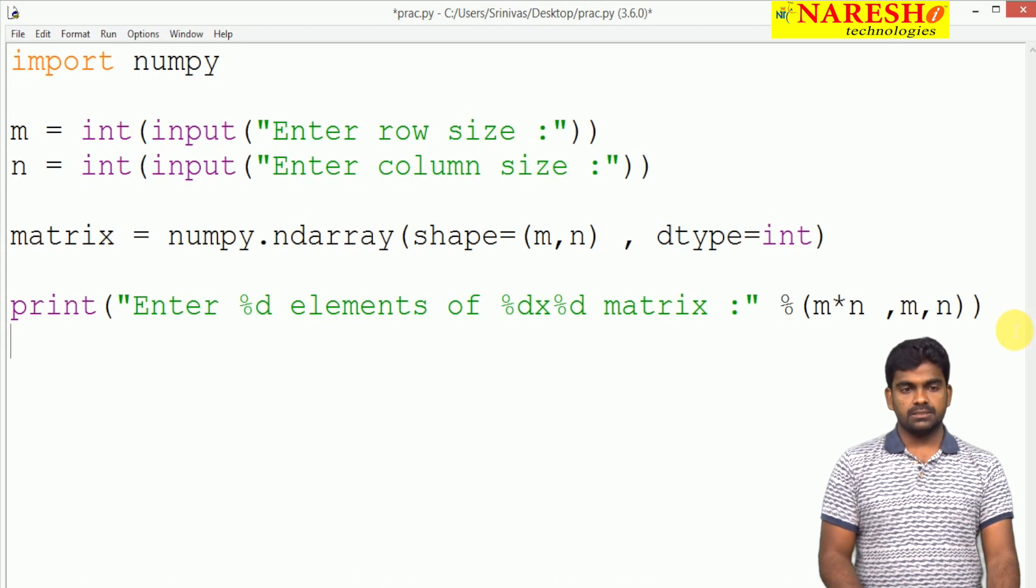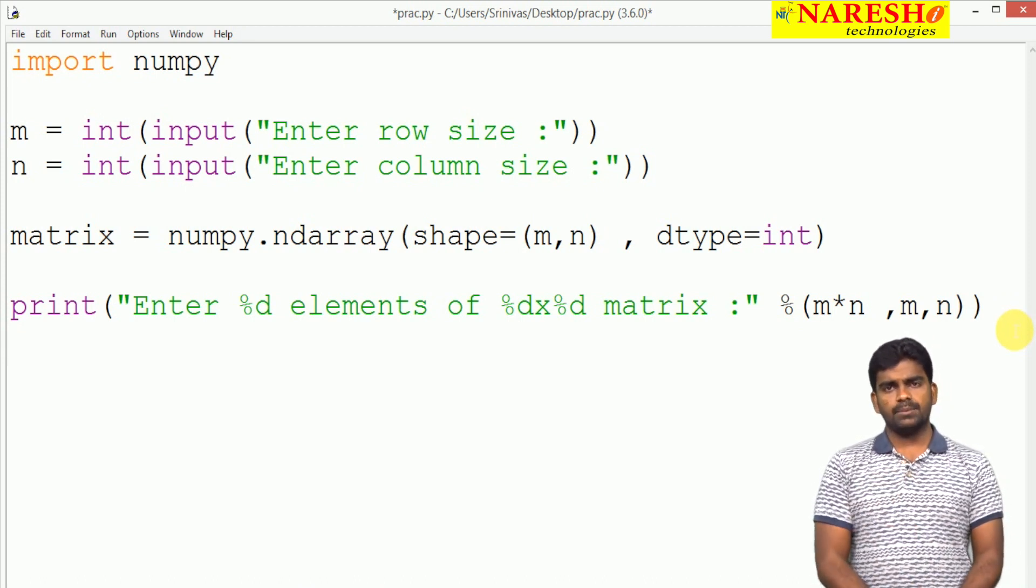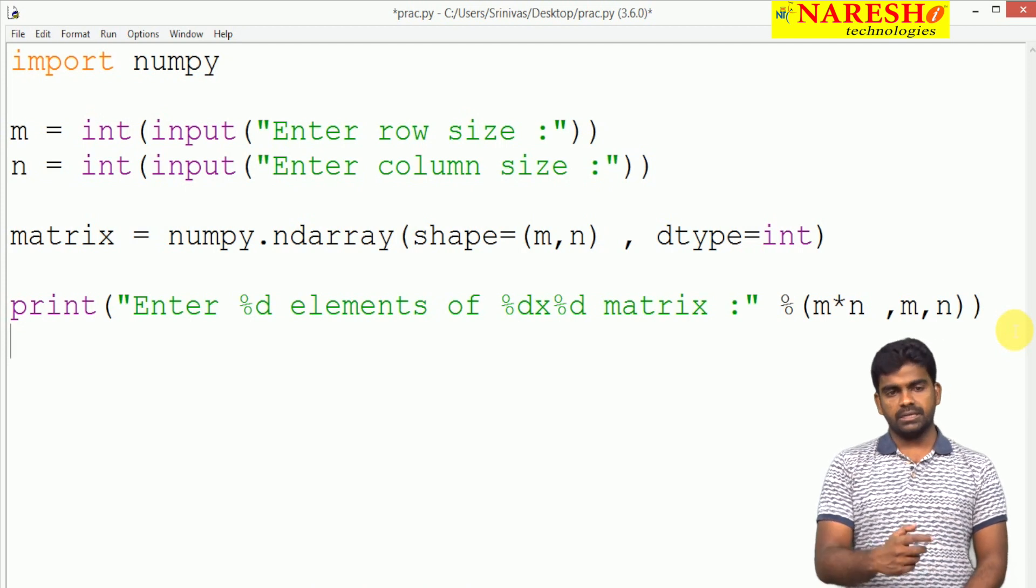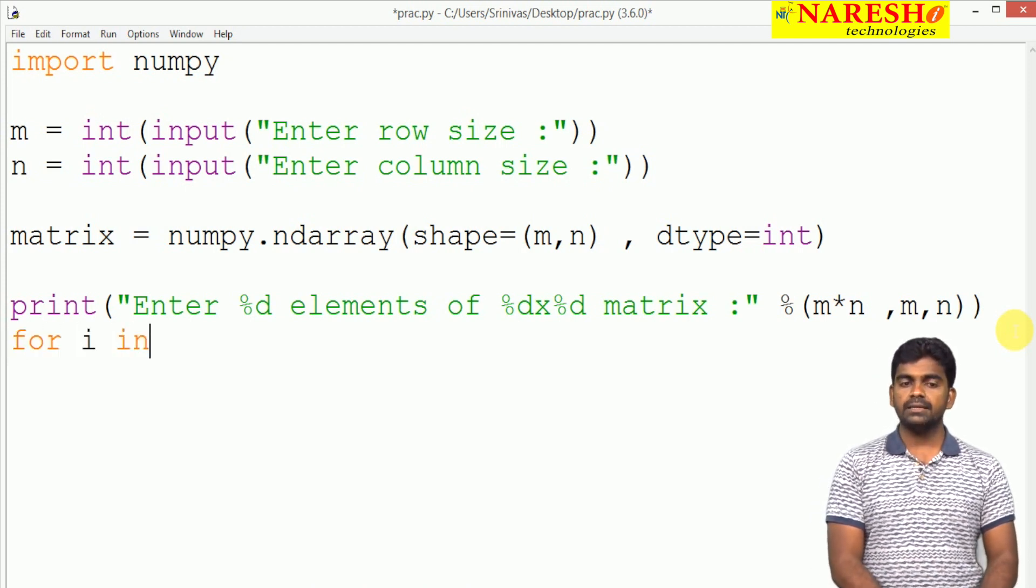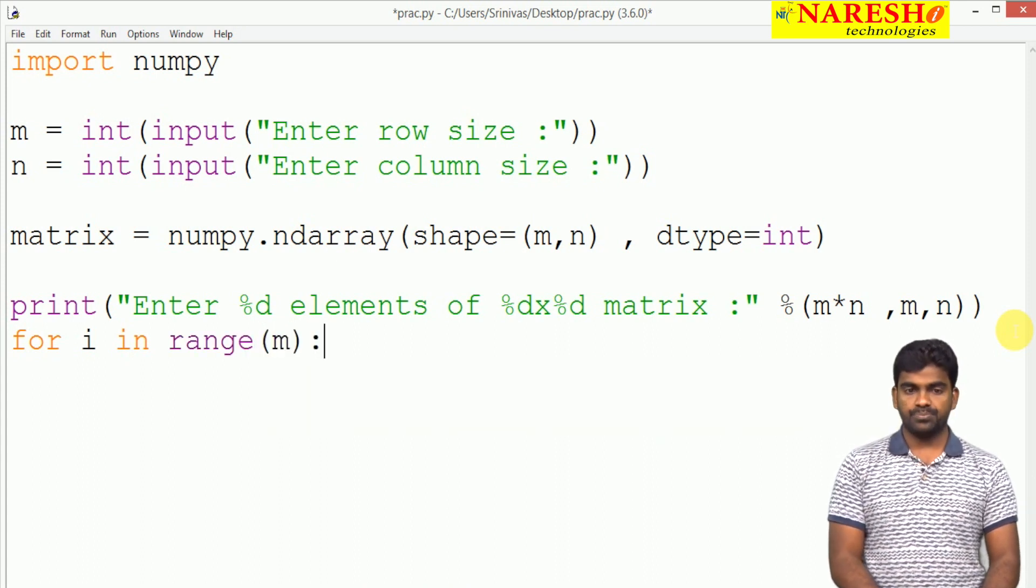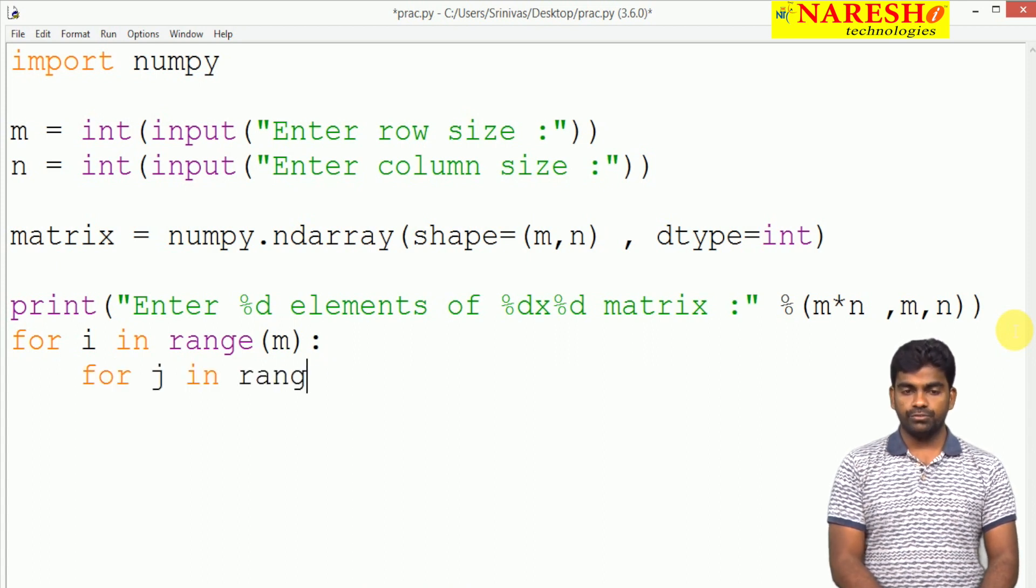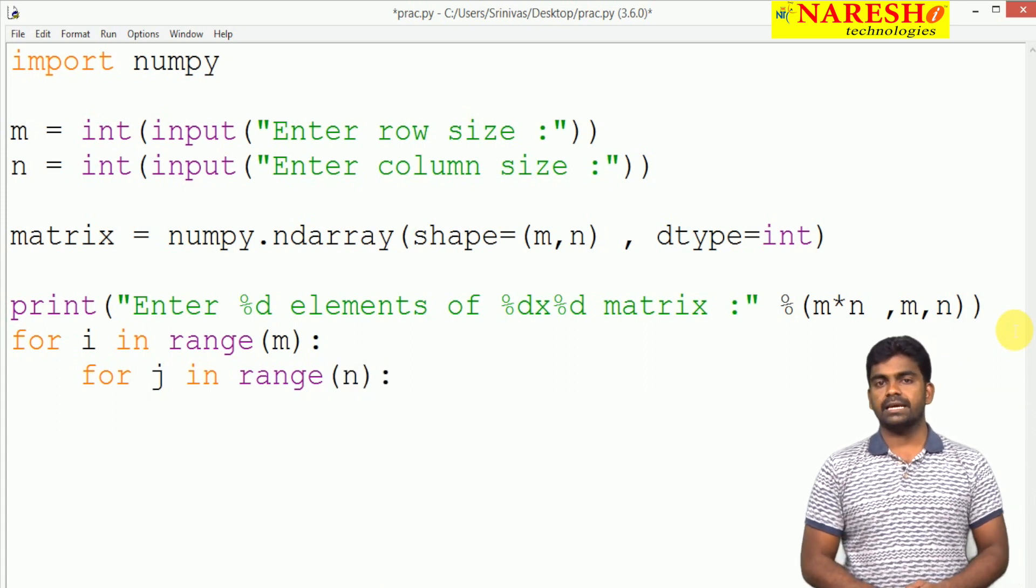We need to collect all the elements. To process a one-dimensional array, one loop is required. Here it is multi-dimensional: for loop i in the range of number of rows m, and next for j in the range of n. M rows and n columns.